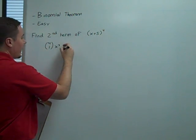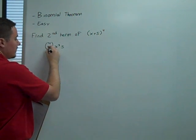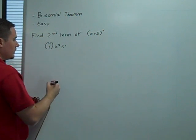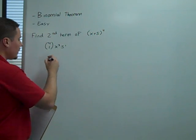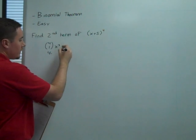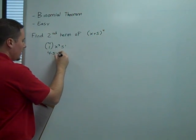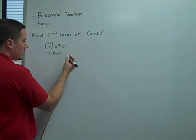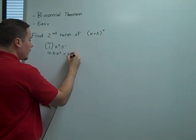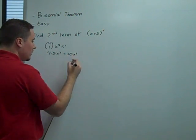So then 5 raised to the bottom term, which is 1. So 4 choose 1 is 4, 5 to the first is 5, and x cubed is x cubed. So our final answer is 20x cubed.